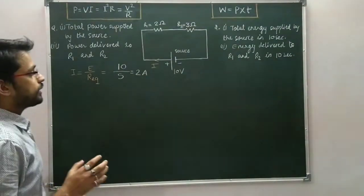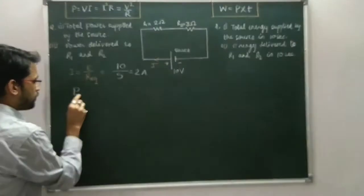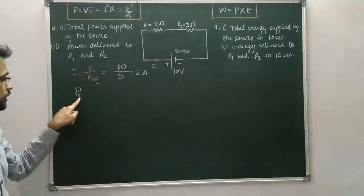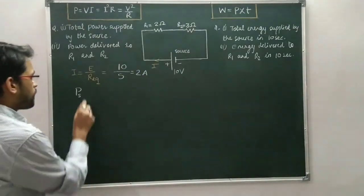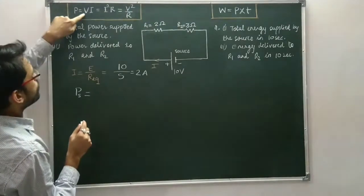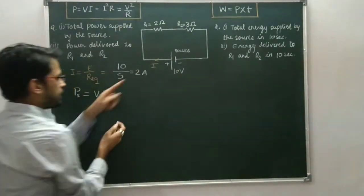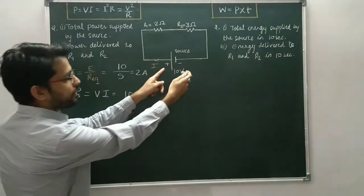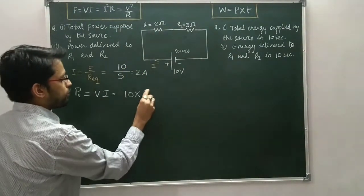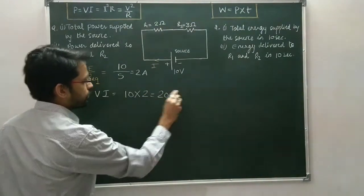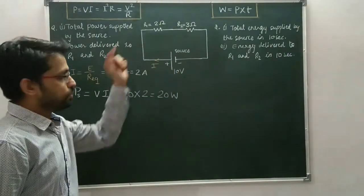Now we can calculate the power supplied by the source using the formula P is equal to V times I. V is the potential difference across the source, that is 10 volts, equal to the EMF of the source, multiplied by the current drawn from the cell, which is 2 amperes. So 10 times 2 equals 20 watts. So 20 watts is the power supplied by the source.